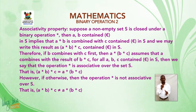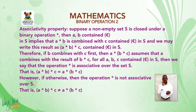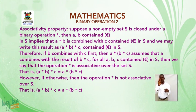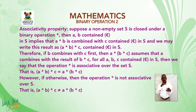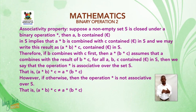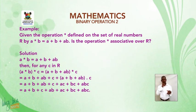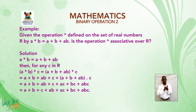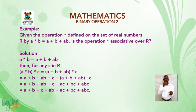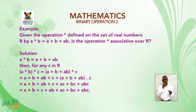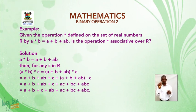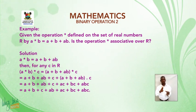If (a★b)★c = a★(b★c), we say that the operation star is associative over the set S. However, if otherwise, then the operation star is not associative over S — that is, (a★b)★c ≠ a★(b★c).